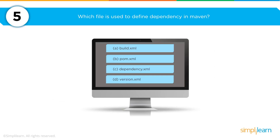Which of the following files is used to define dependency in Maven? Is it (a) build.xml, (b) pom.xml, (c) dependency.xml, or (d) version.xml? The answer is (b): pom.xml.